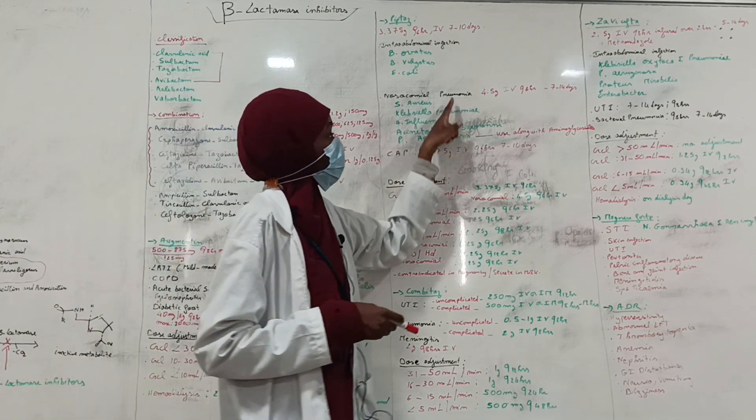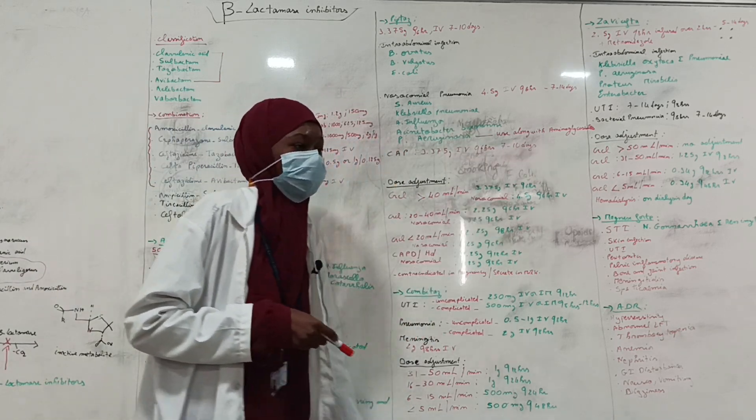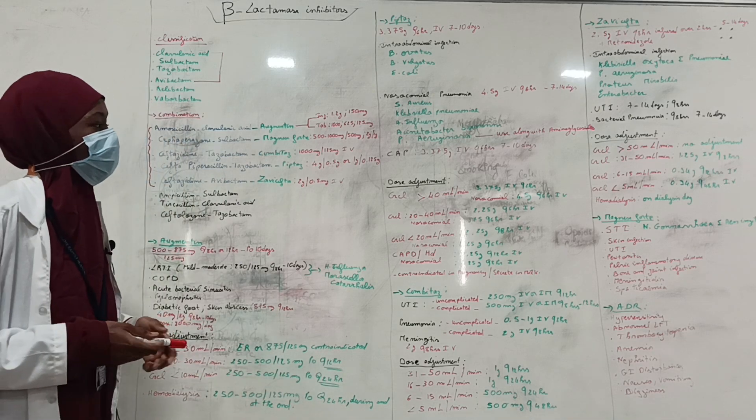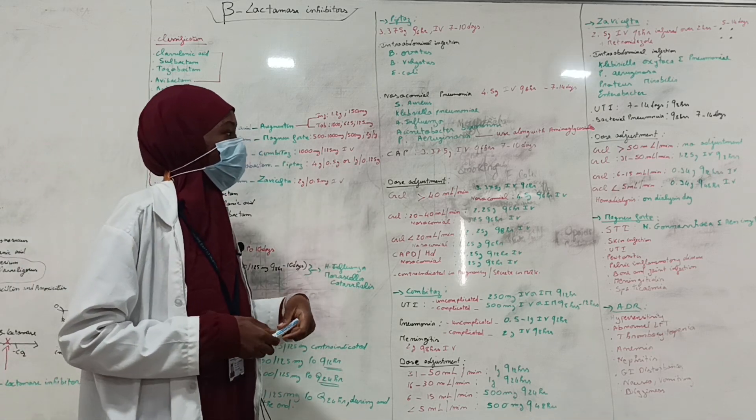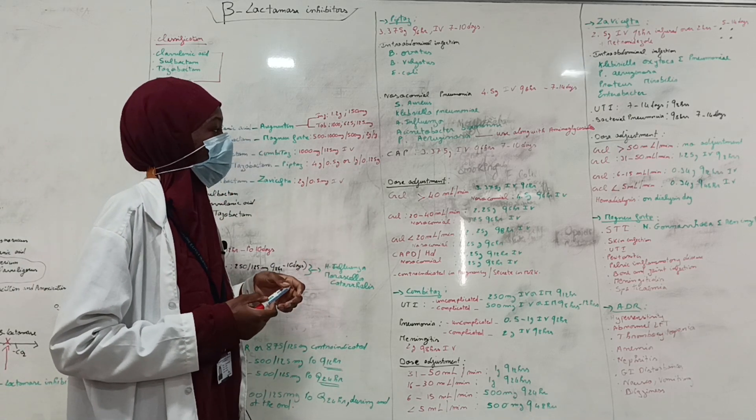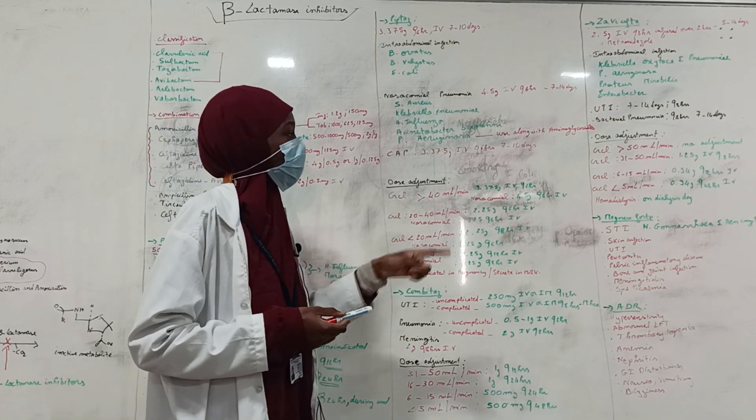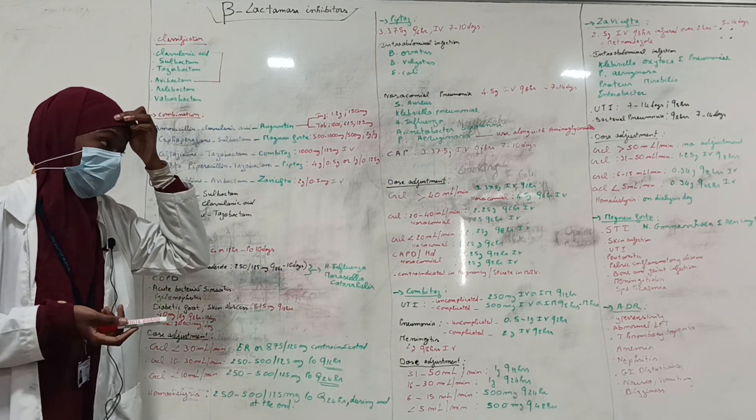For this one, it should be used along with aminoglycosides, not alone. And for community-acquired pneumonia, a dose of 3.375 g IV every 6 hours for 7 to 10 days is recommended.